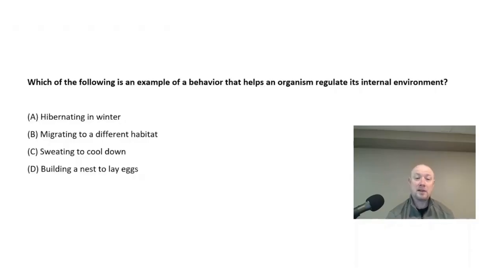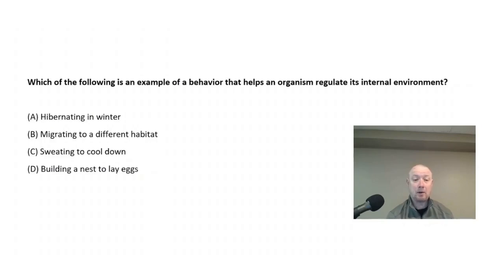Which of the following is an example of a behavior that helps an organism regulate its internal environment? Is it A, hibernating in winter; B, migrating to a different habitat; C, sweating to cool down; or D, building a nest to lay eggs?